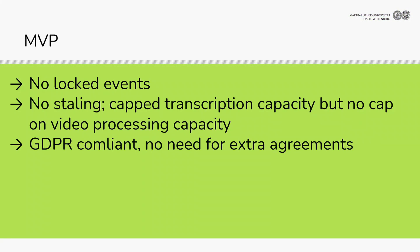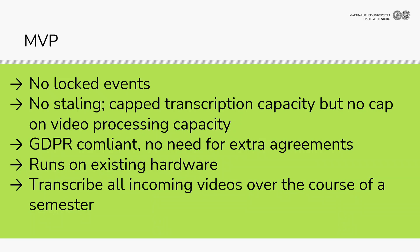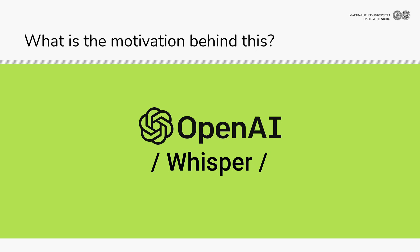So how should a minimum viable product look? Events are not locked, there's no stalling. We may have a cap on transcription capacity, but there should be no cap on video processing capacity — otherwise we'll get emails. We should be GDPR compliant, run on existing hardware, and transcribe all incoming videos over the course of a semester continuously.